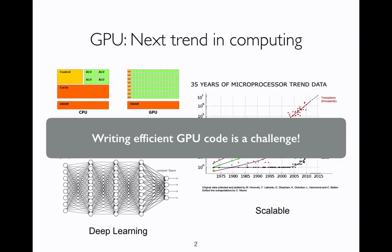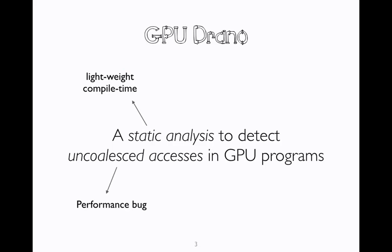This work is about one such tool. GPU Draeno is a tool that detects uncoalesced accesses in GPU programs. Uncoalesced access is a performance bug that's well-documented in the GPU community, but there is very little tool support to identify such accesses. GPU Draeno is a lightweight compile time static analysis to detect such bugs.